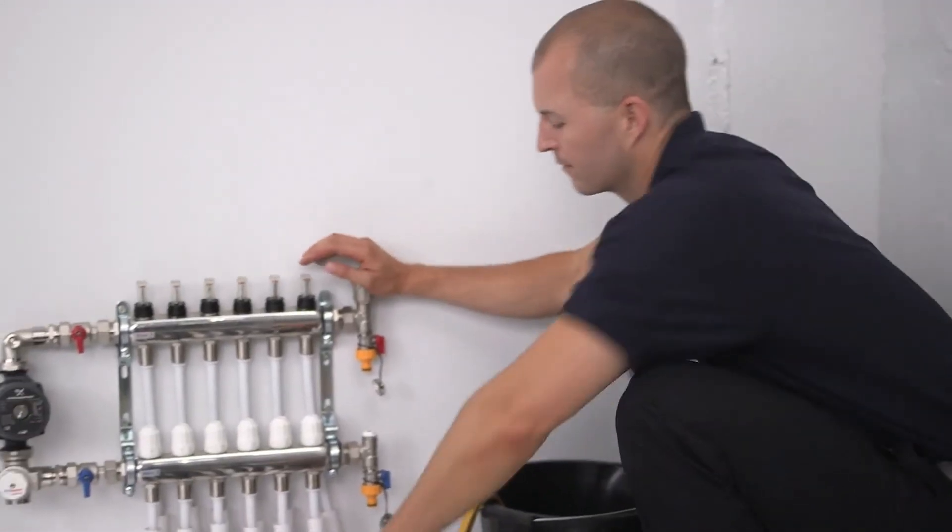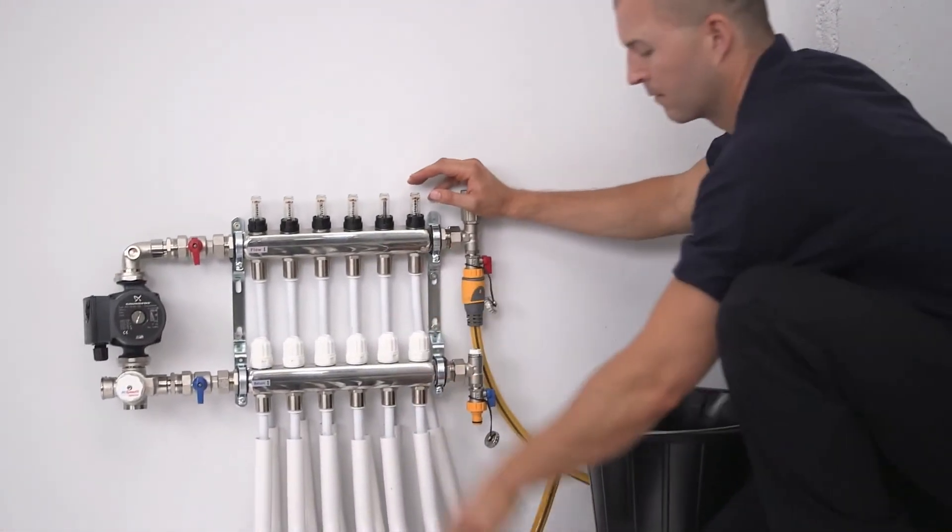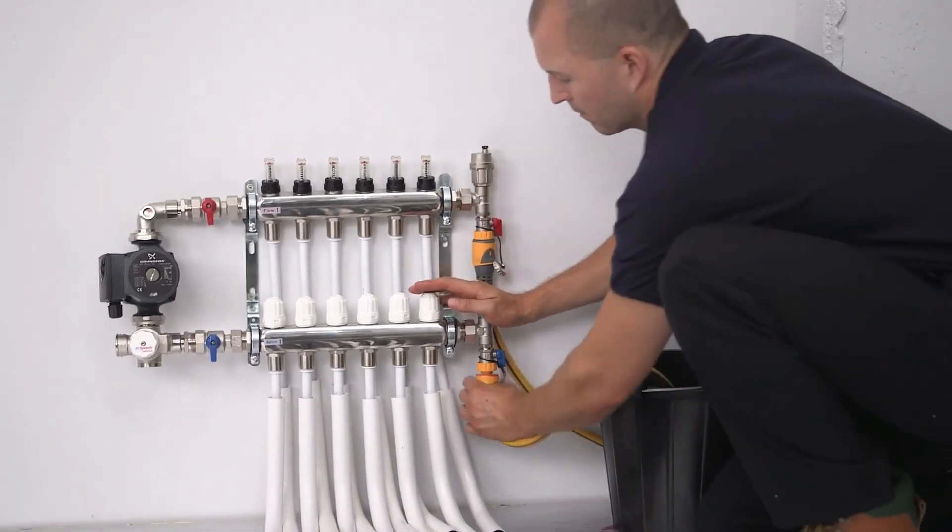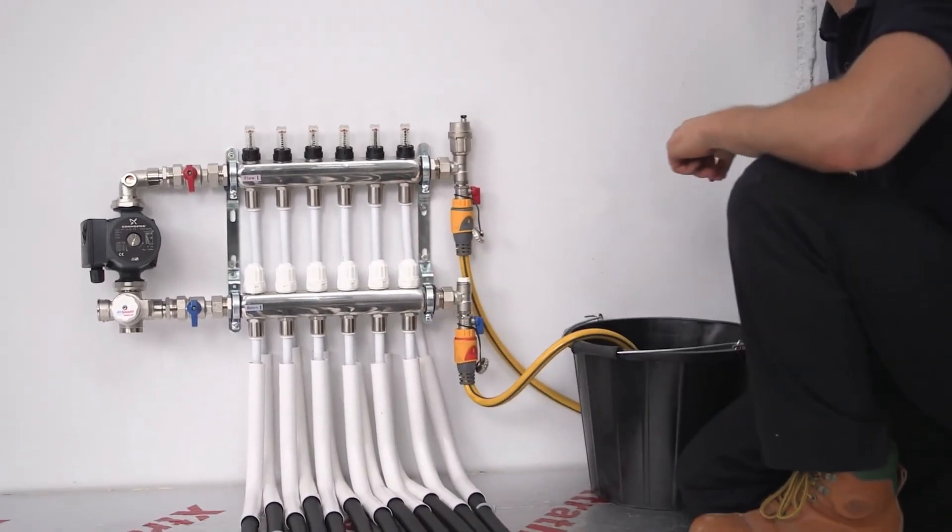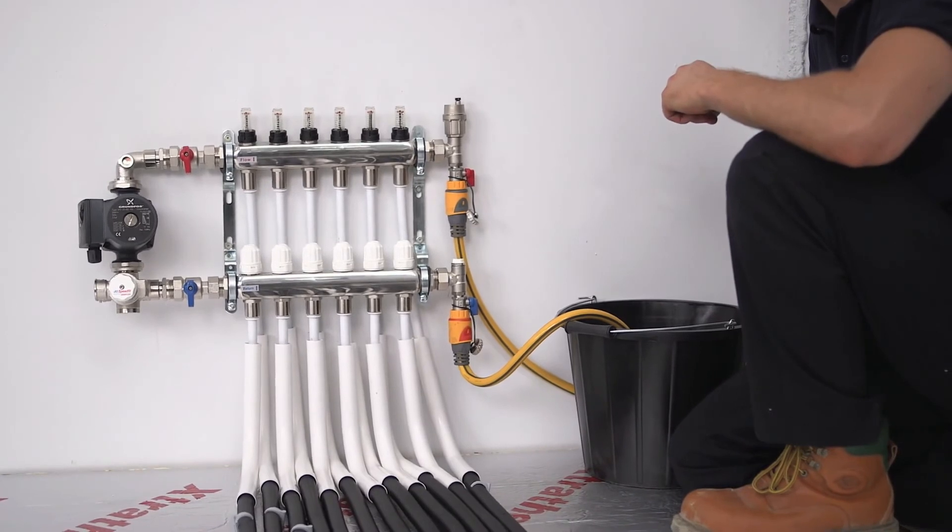Under no circumstances should the UFH be used for speeding up the drying period. If the UFH has been installed when there is a possibility of freezing conditions, suitable antifreeze should be added to protect the pipe work. The system will need to be flushed out and refilled prior to operation.